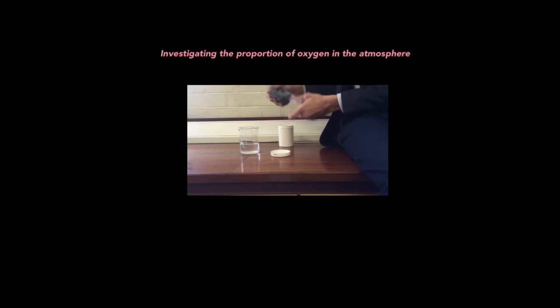And finally, we look at the experiment where we can investigate the proportion of oxygen in the atmosphere. In other words, how can we prove the atmosphere is 20% oxygen? This experiment forms the basis of many exam questions in the chemistry module, but it's dead easy to understand. So this practical can be performed in a number of ways, and I'm going to show you two of those ways. But remember, the principle is always the same.